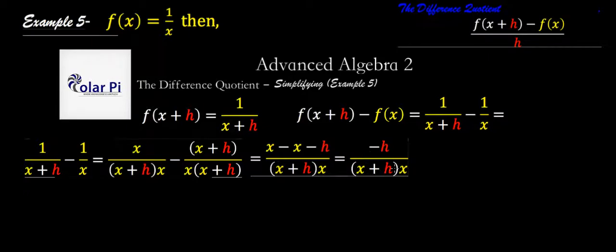Now look here. This here is a simplified version of f of x plus h minus f of x after we got common denominators. In other words, this here is f of x plus h minus f of x.